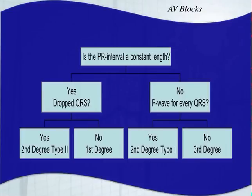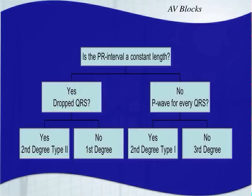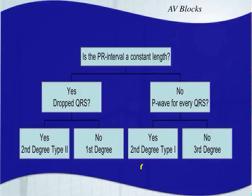Here's an easy algorithm to identify AV blocks. First, ask: is the PR interval a constant length? If yes — do you have a dropped QRS complex? If no dropped QRS, it's a first degree AV block. If there is a dropped QRS, it's Mobitz 2, a second degree type 2. If the PR interval is not a constant length, ask: do you have a P wave for every QRS complex? If yes, it's Mobitz 1, a second degree type 1. If no, it's a third degree AV block. Even with Mobitz 1's dropped beats, there is still a P wave for every QRS complex that exists.